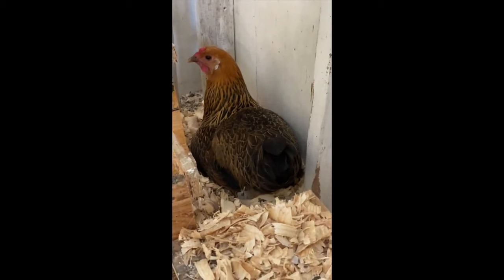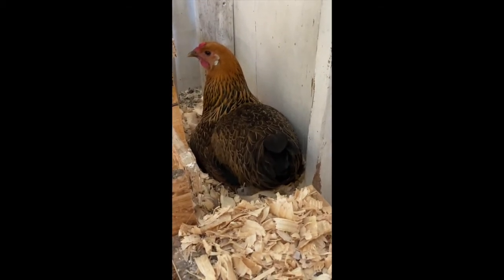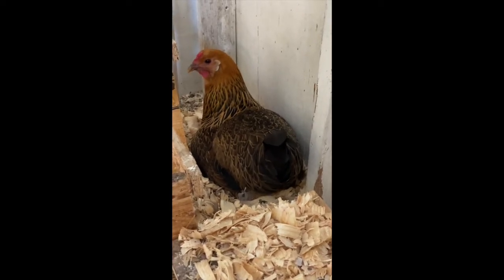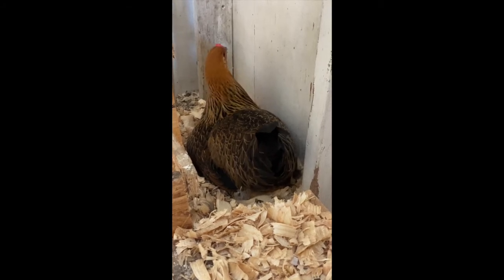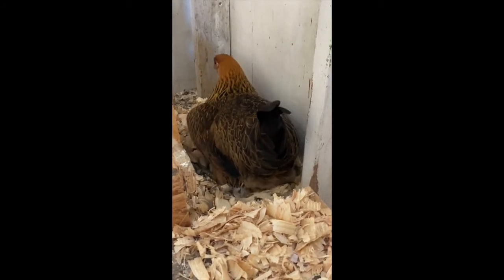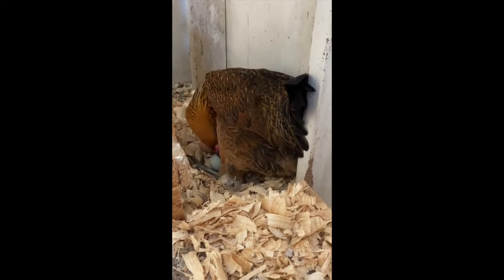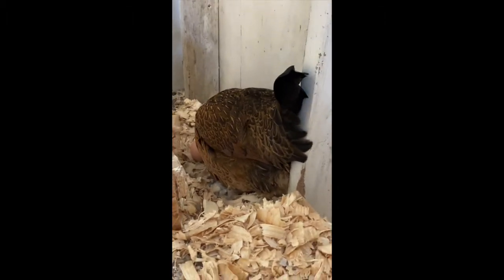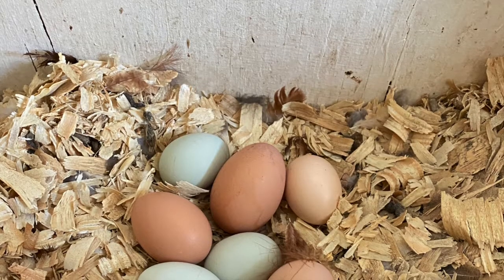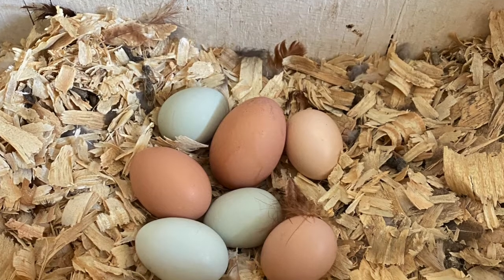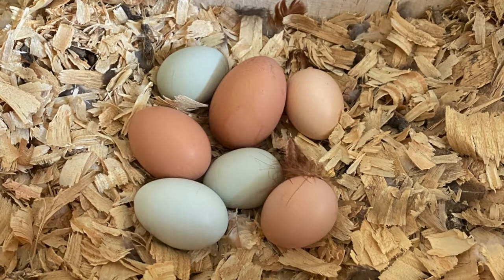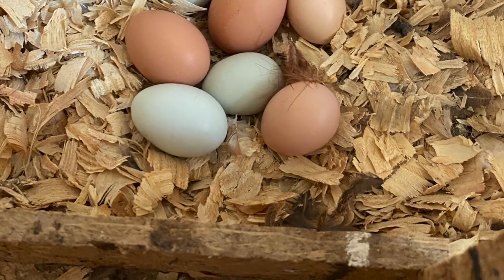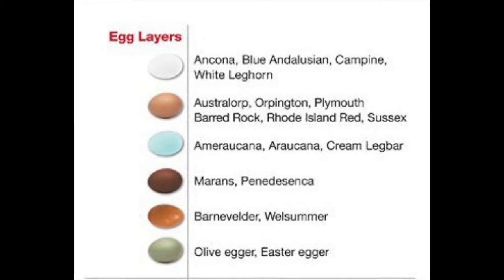When the hen is full grown, she can begin to lay eggs. This chicken is named Agatha and she's working on laying an egg right now. Different hens may lay their eggs in a nest box, or they may all lay at the same location. Not all of these eggs were just laid by Agatha — she just laid one today.